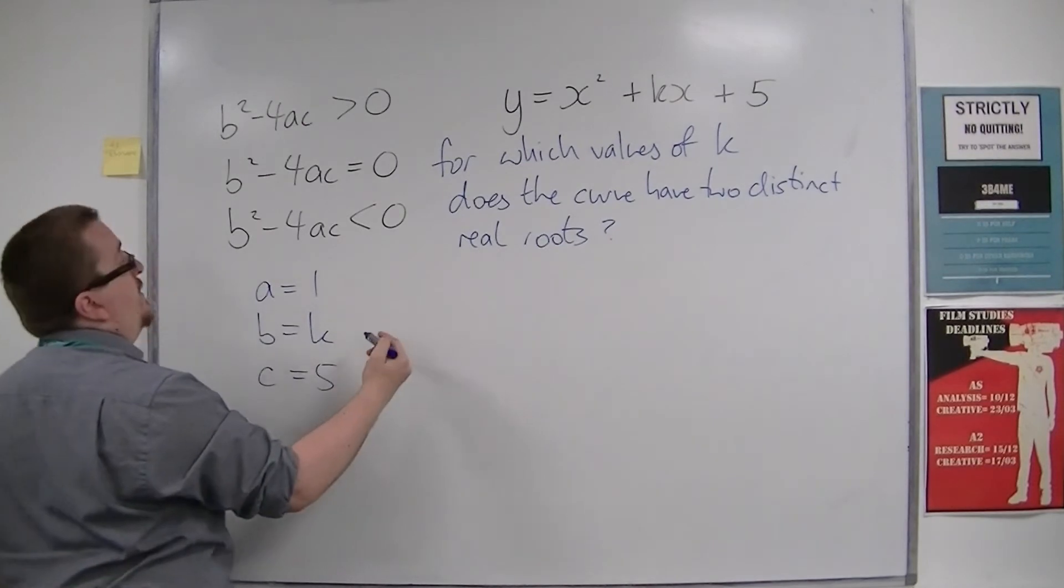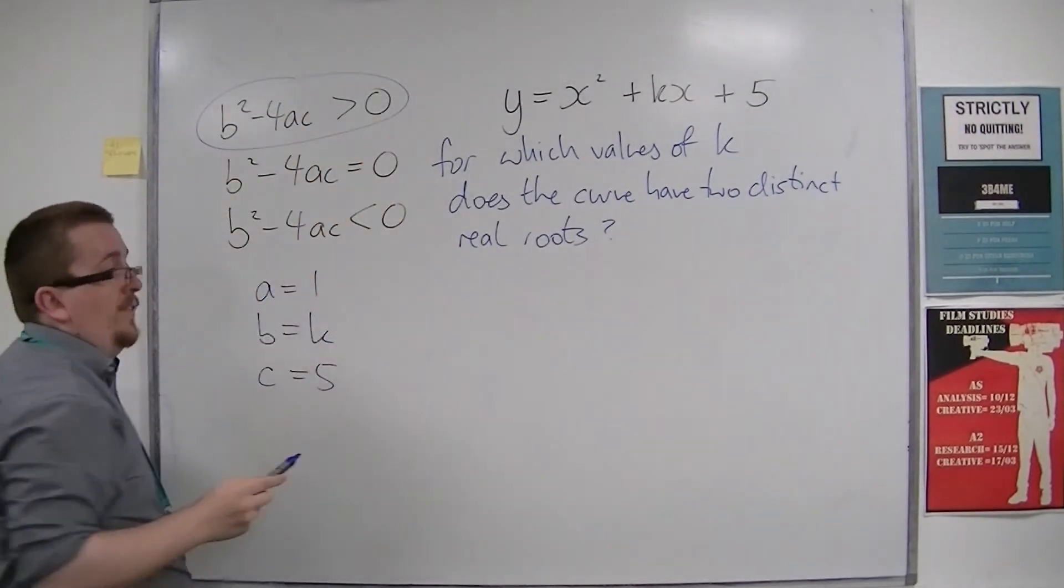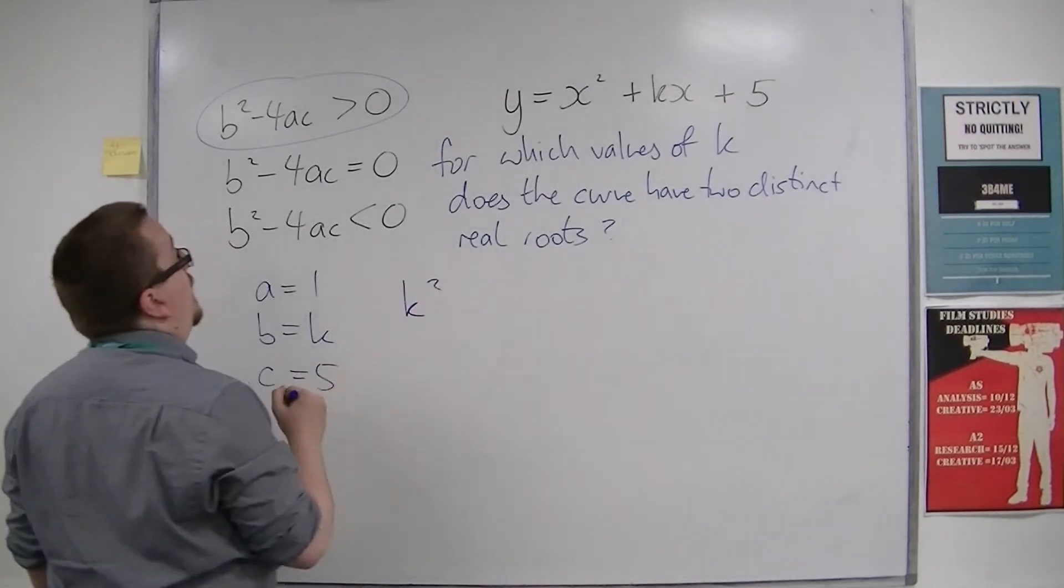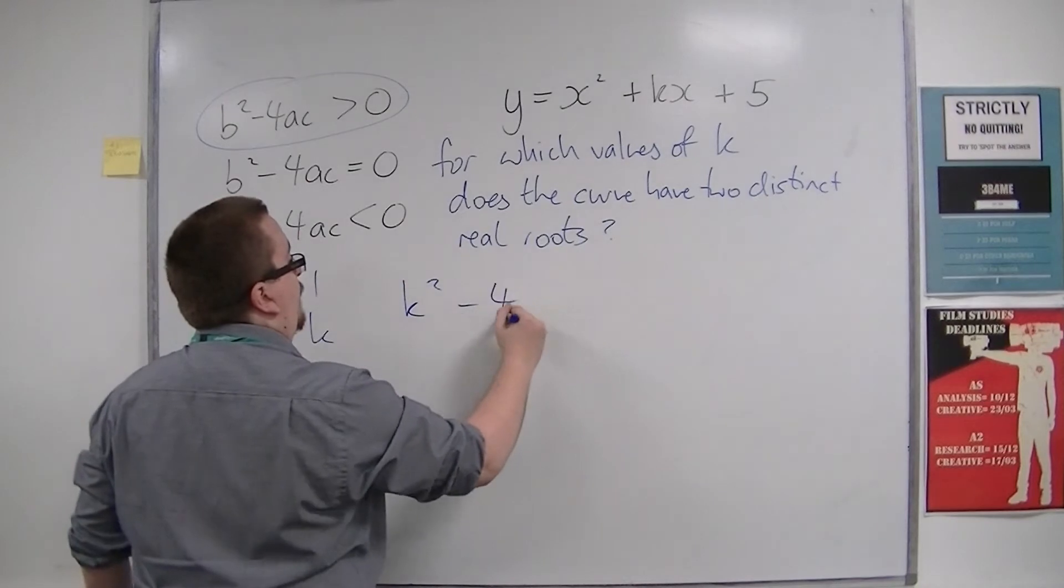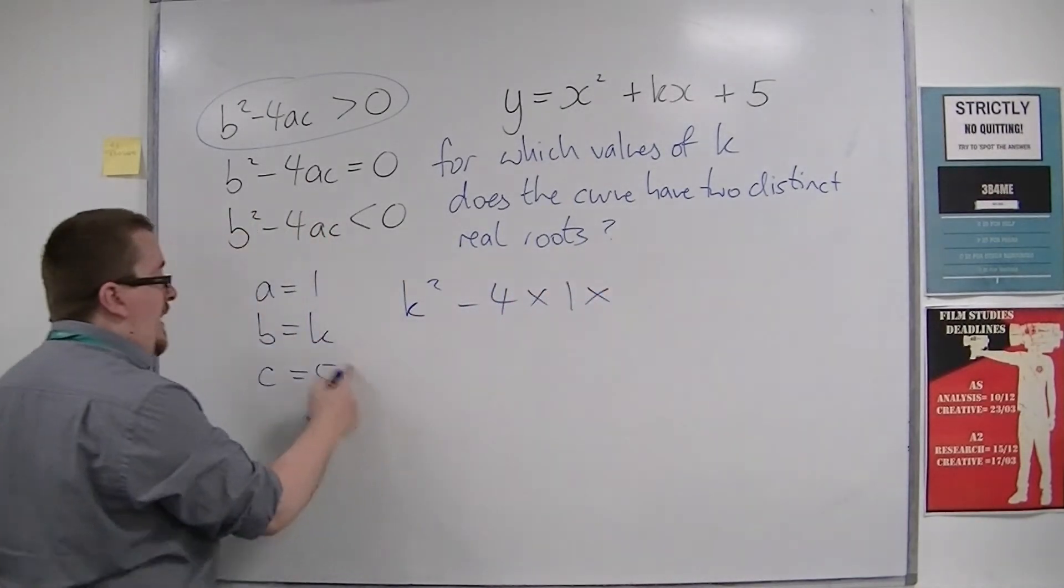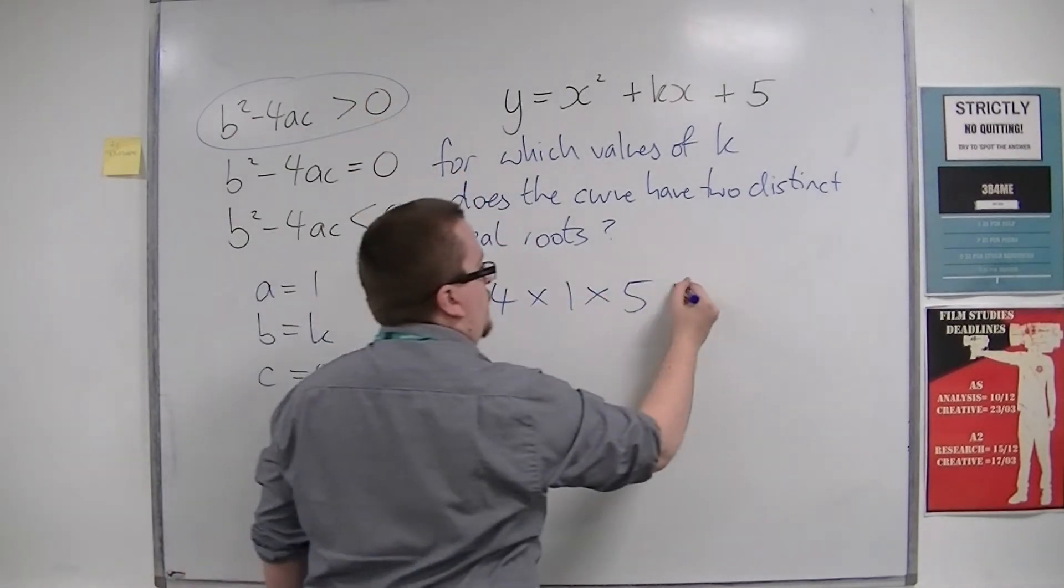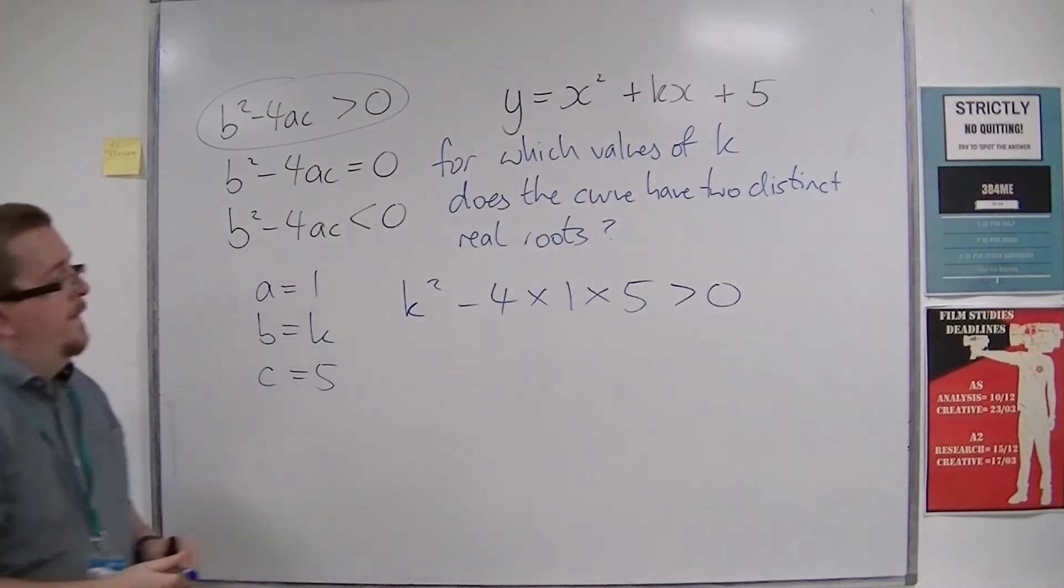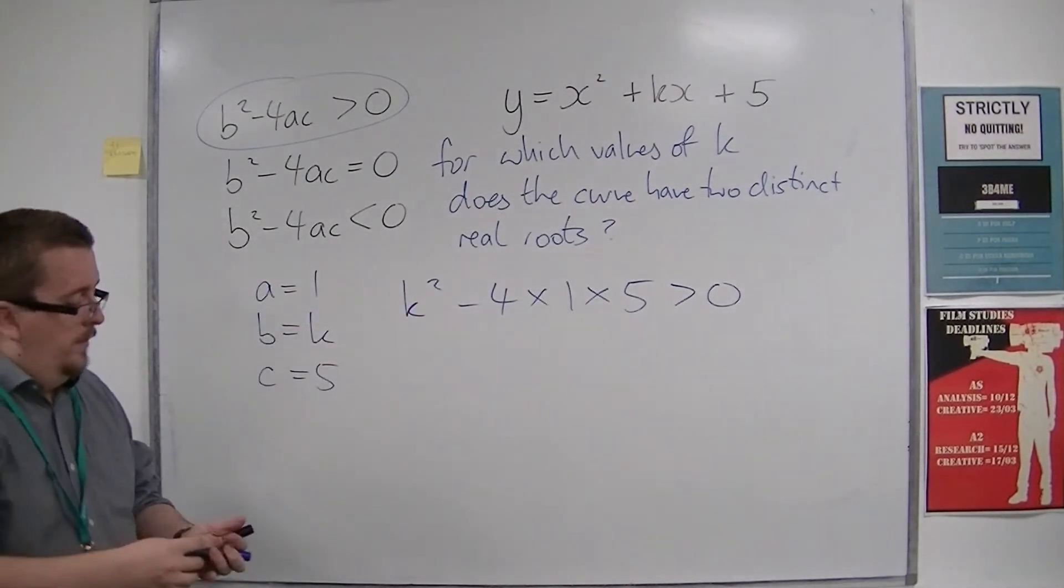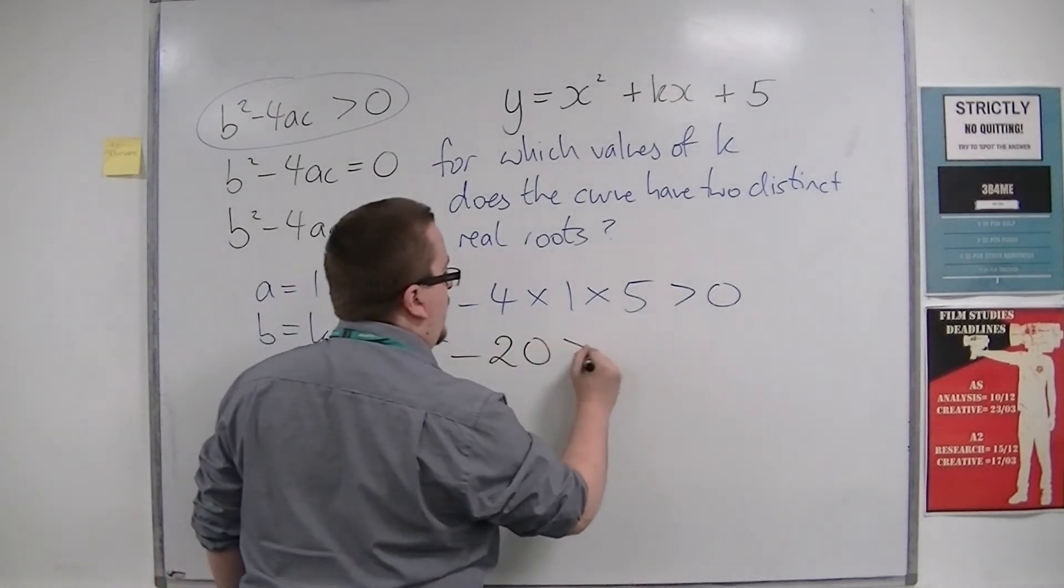Then the discriminant, for it to have two distinct real roots, would have to be greater than zero. So b squared, so k squared, minus 4 times a times c, which is 5, must be greater than zero. If we simplify this, then we have k squared minus 20 is greater than zero.